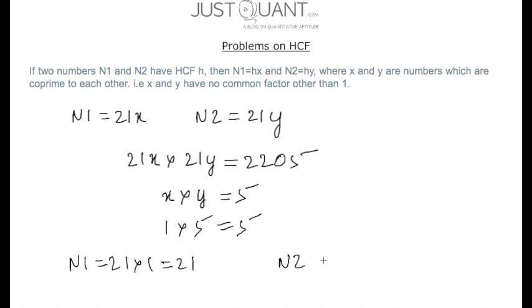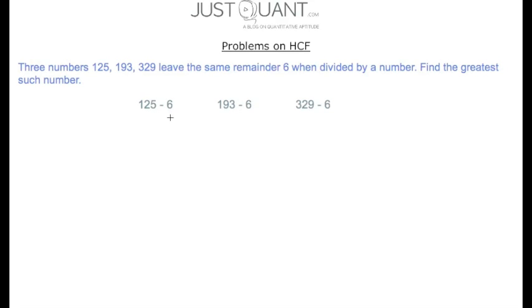And n2 = 21 × 5 = 105. Now for the next problem: three numbers 125, 193, and 329 leave the same remainder 6. That is, when 6 is subtracted from each of these numbers, the resulting number is exactly divisible by a number n, and we are supposed to find the greatest value of n.